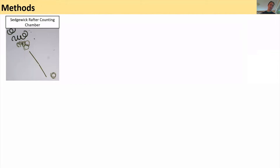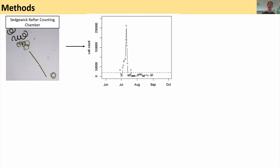My contribution here really comes from doing daily cell counts starting in 2017 and continuing today. What we use is the Cedric Rafter counting chamber — we identify the dominant species and do cell counts of total cyanobacteria. That gives us something that looks at change in abundance over the season.